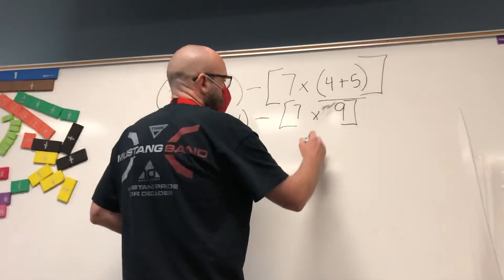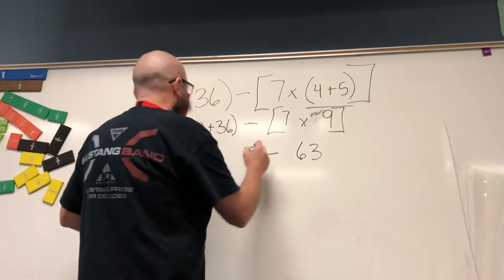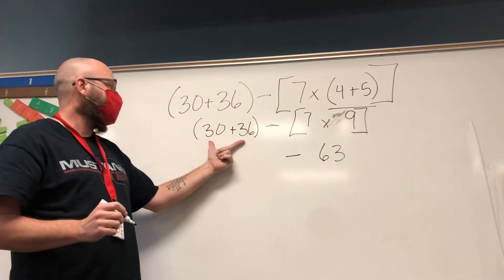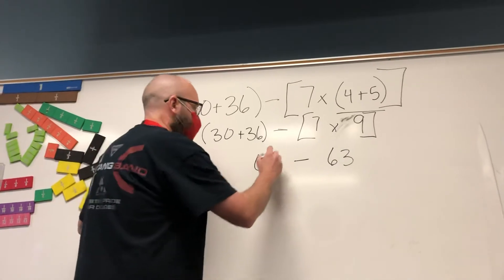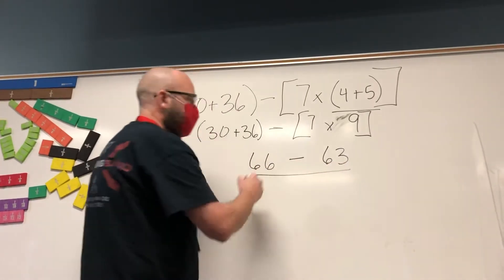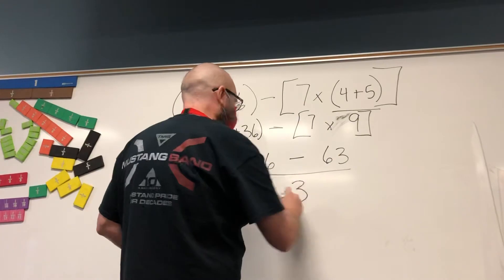7 times 9 is 63, minus. And 30 plus 36 is 66. And 66 minus 63 is 3.